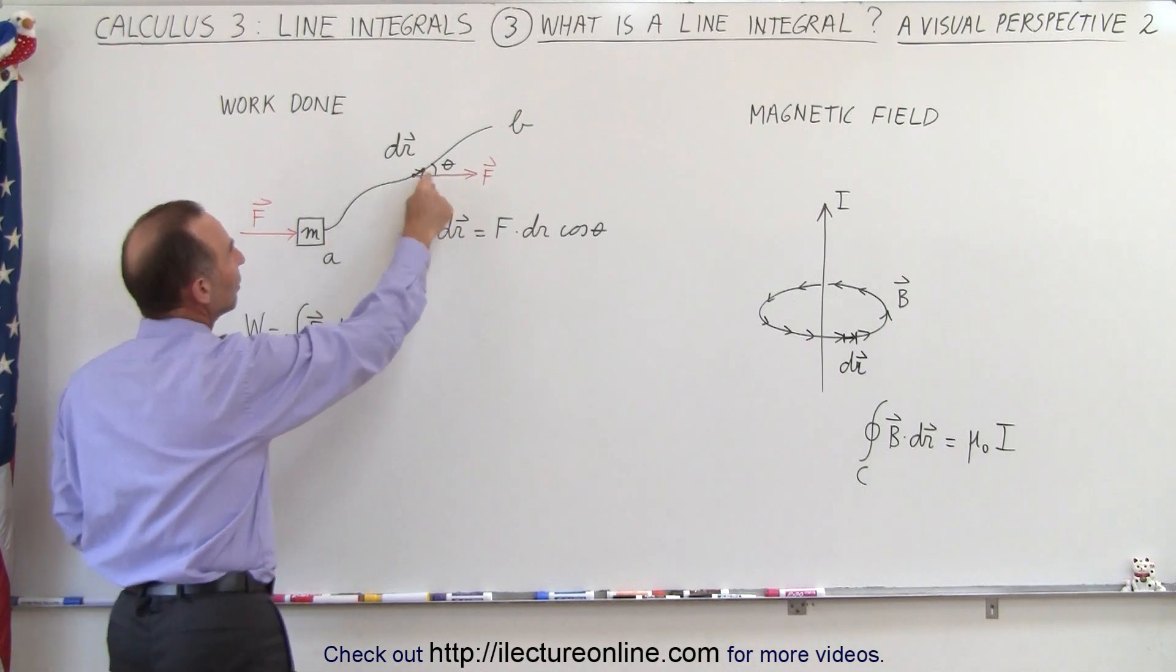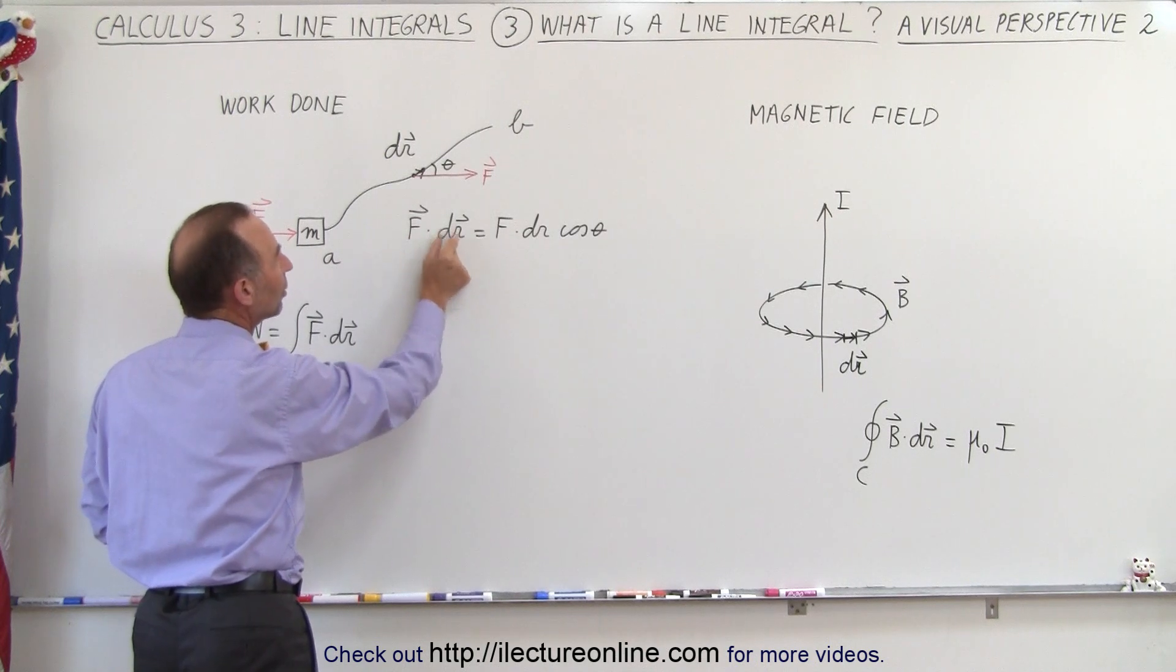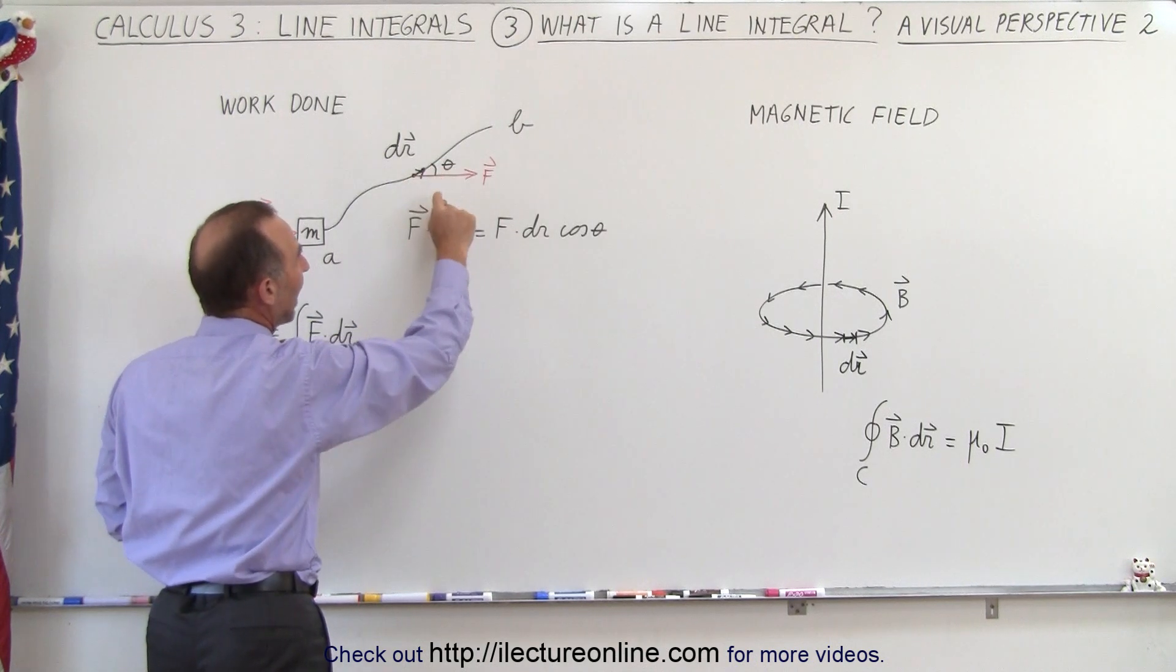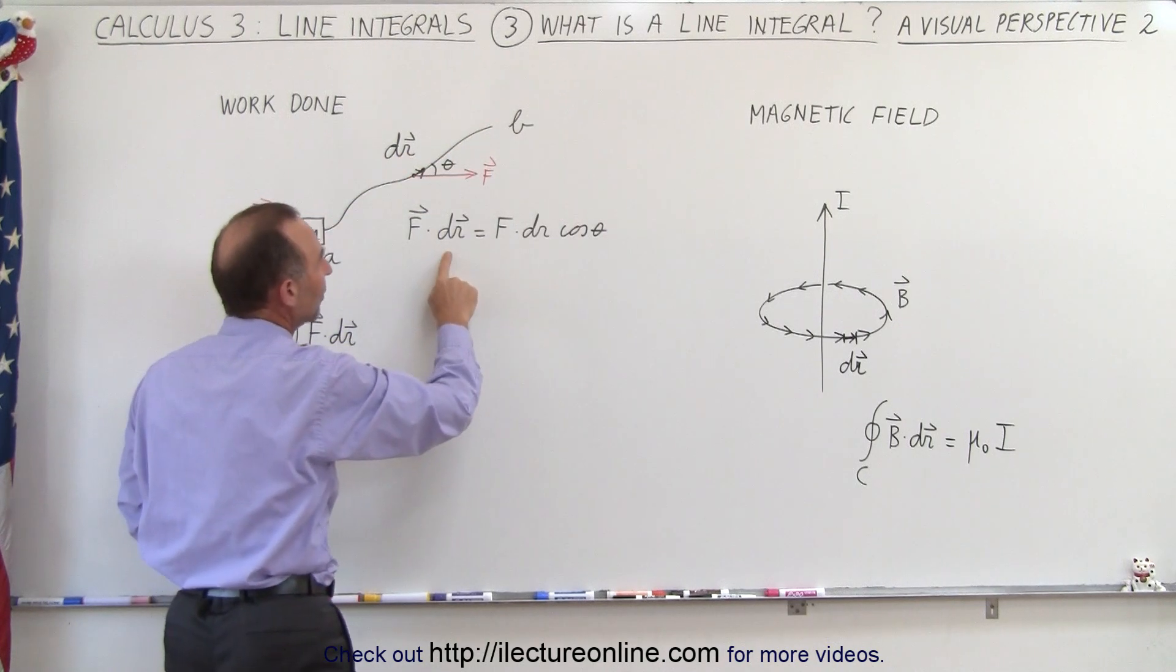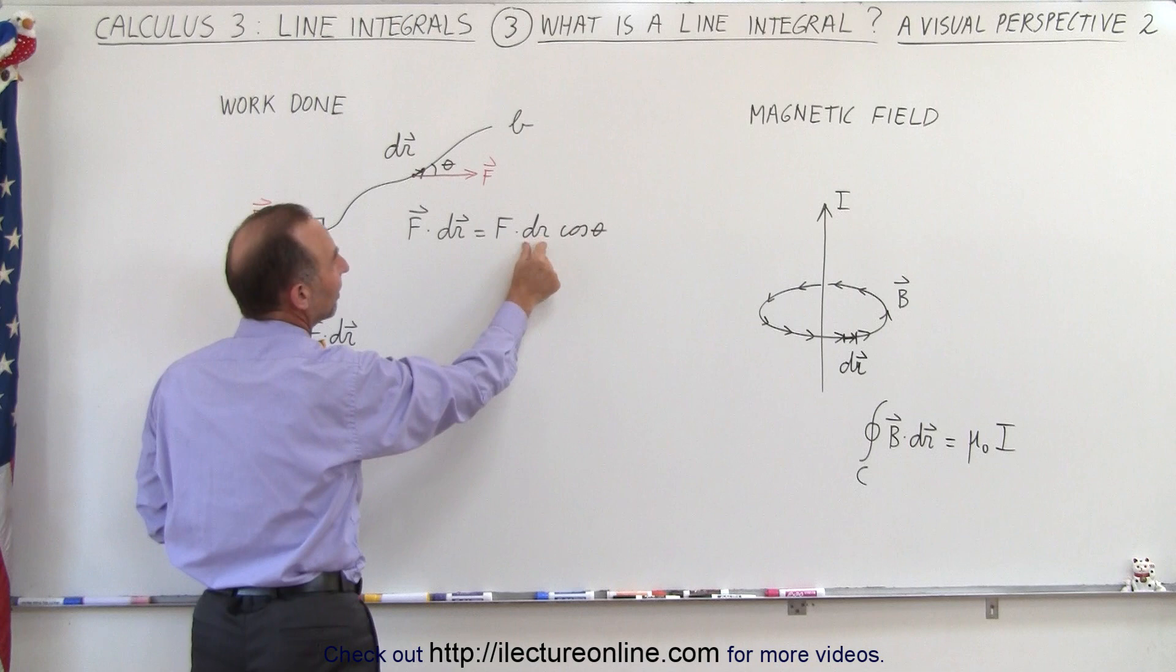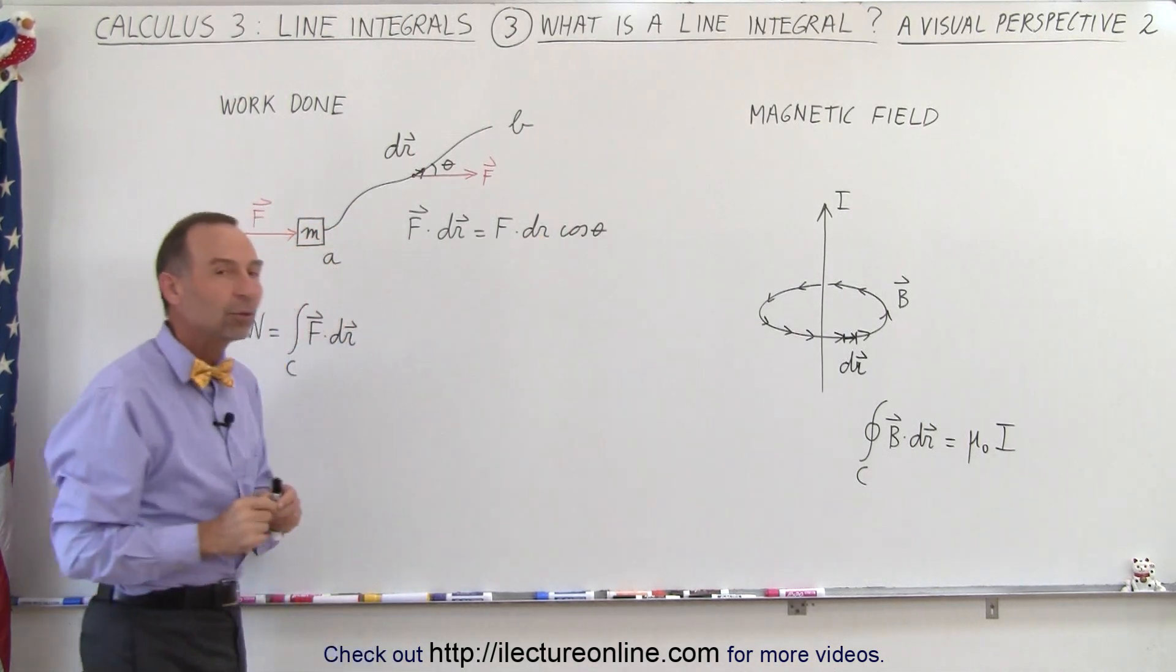If we multiply these two vectors together via the dot product, we have the force dotted with a small advancement along the path, and that's equal to the magnitude of the force times the magnitude of the displacement times the cosine of the angle between them.